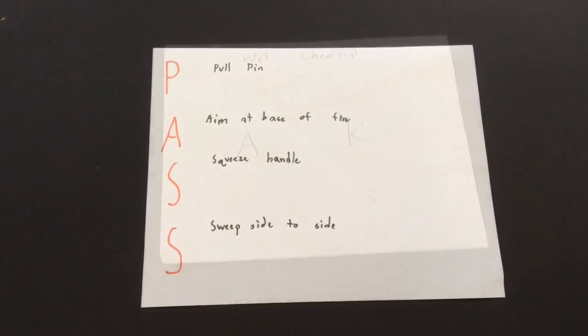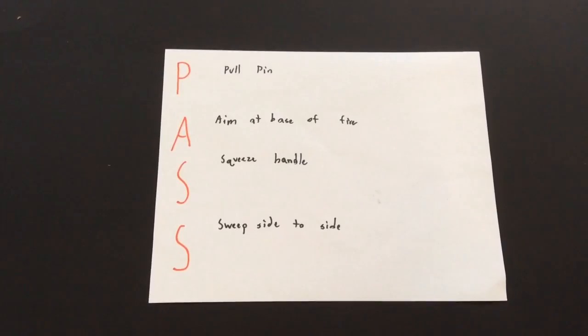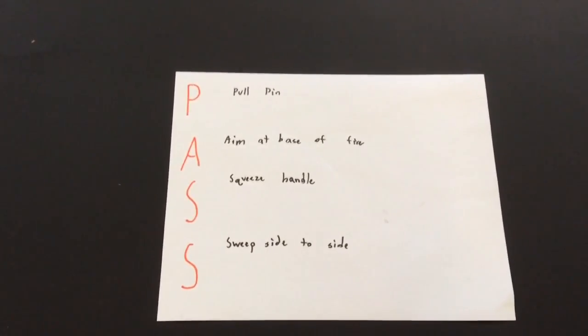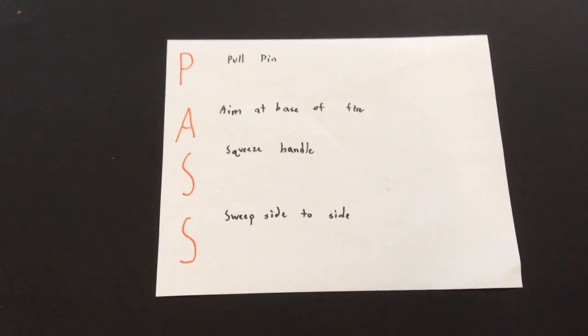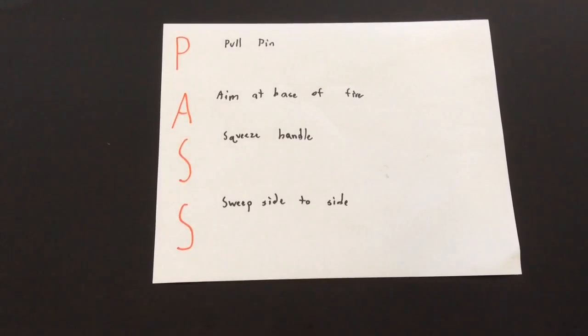The method to operate a portable fire extinguisher is PASS. It stands for pull, aim, squeeze, and sweep. So you should pull out the pin, aim at the base of the fire—make sure it's the base, not just the flames—squeeze the handle, and sweep side to side.